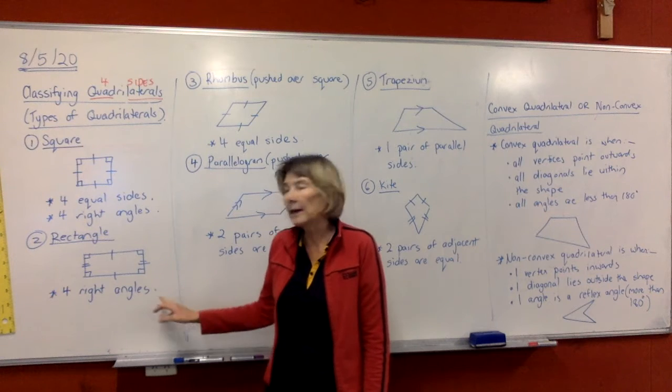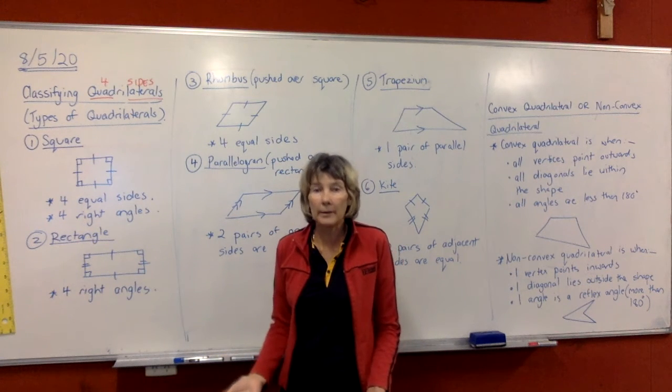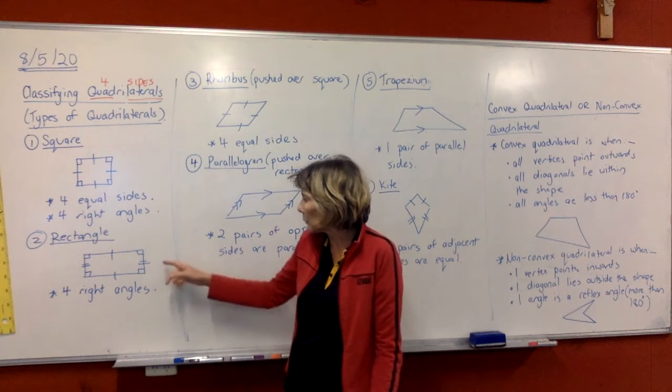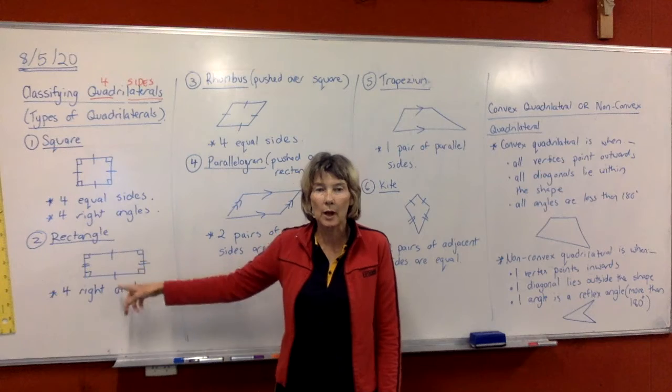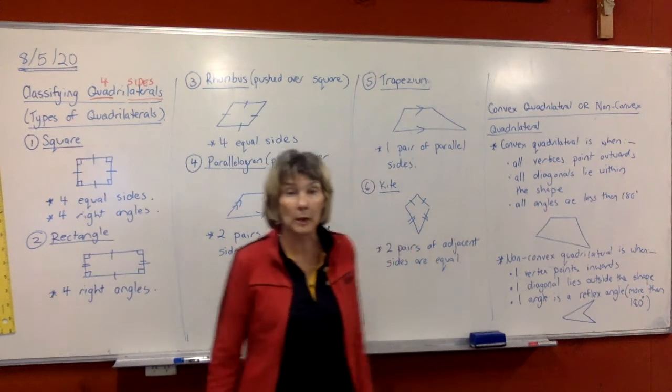Number two, a rectangle. It has four right angles. We don't really need to say any more about it than that. If it's got four right angles, it's going to be a rectangle. But we do know that these opposite sides are going to be equal and so will this pair of opposite sides be equal as well.